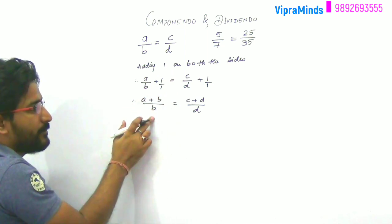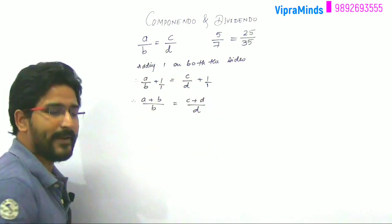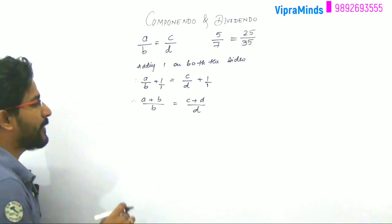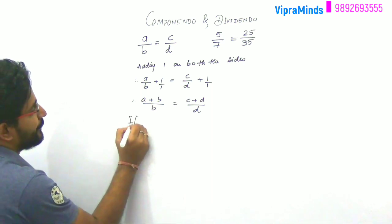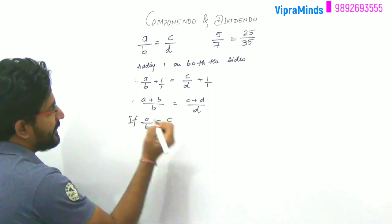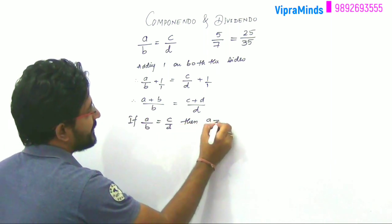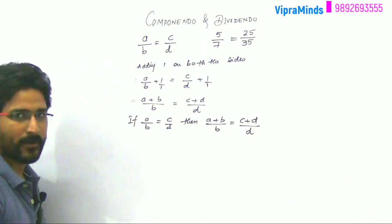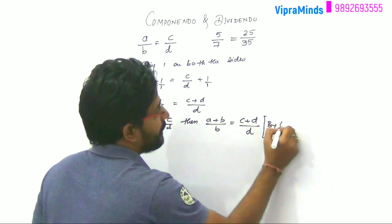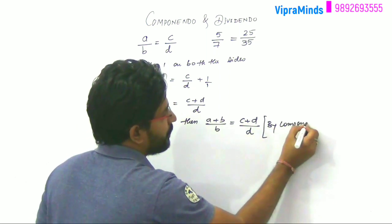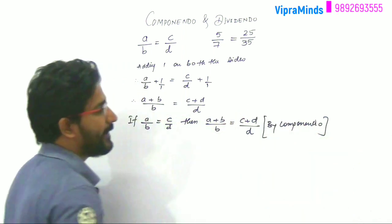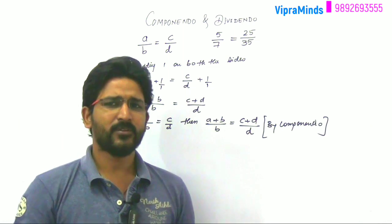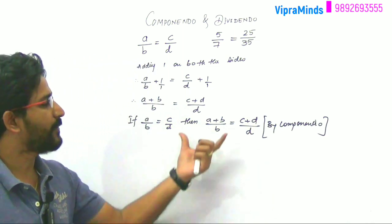If the same thing is equal, the sign is maintained. Then a plus b by b will be equal to c plus d by d. So this is by Componendo property. This is called a property.